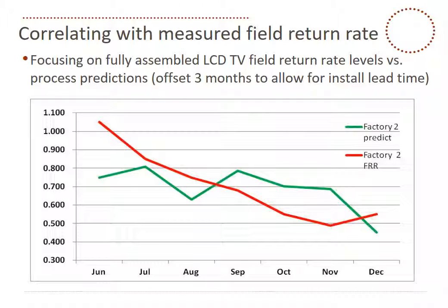When we start correlating this with measured field return rate, this is the key to everything. It's fine making a prediction, but if it's not realistic, it's a waste of time. Here we are focusing on fully assembled LCD TV field return rate levels versus process predictions, offsetting them three months to allow for an installation lead time. The red is a basically averaged factory field return rate taken from the domestic market, and the green is the prediction from the same factory — a pretty good general fit. The red line rolls together an average of three months at a time of field data, and different products or vintages get mixed in the field. If we simulate that mixing with our prediction, we would get something very similar to the red trend line.